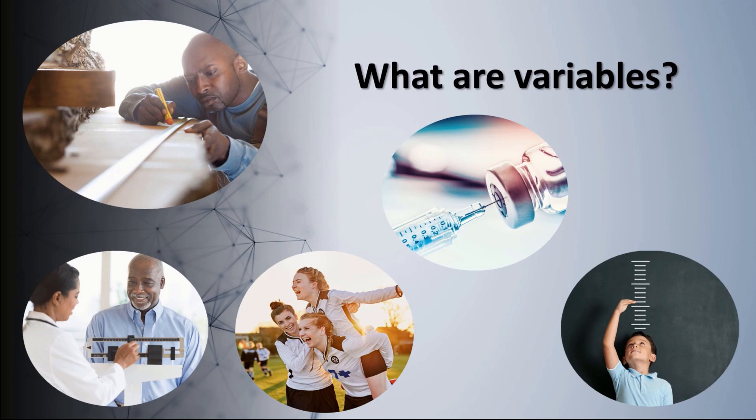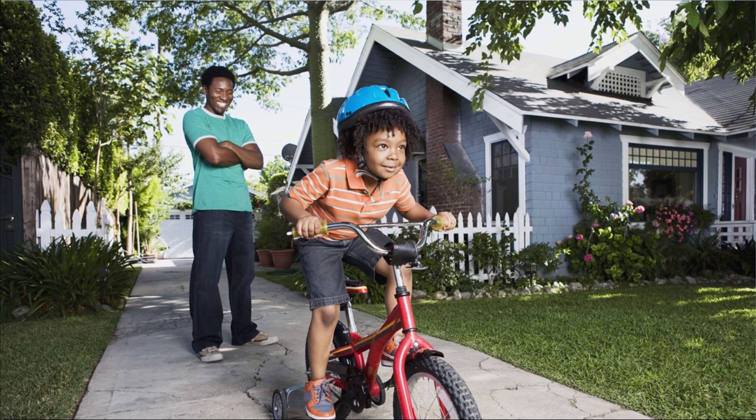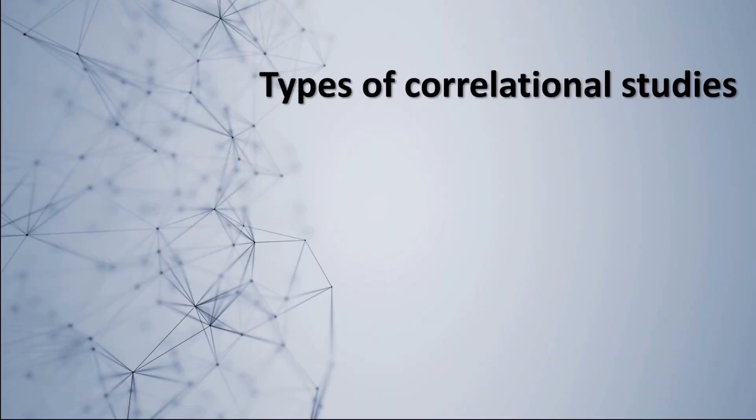It's worth noting that correlational studies measure at least two variables, but they can measure more than that. There are also many different types of correlational studies. However, this video is meant for a general psychology course, so I'm not going to get into a ton of detail about the various types. There are three that I think you should know about.